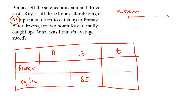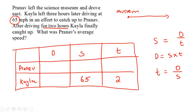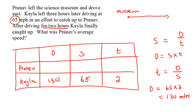How long did Kayla drive for? Kayla left three hours later — that's not how long she drove for. After driving for two hours, so Kayla drives for two hours. From our speed, distance, and time formulas, we can work out the distance Kayla travels: D equals 65 multiplied by 2, giving 130 miles. Now remember that with these questions the distance traveled by both is the same because they're catching up — so the distance of Pranav is going to be 130. Kayla left three hours later and still had to drive two more hours, so Pranav traveled for five hours in total.